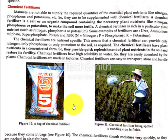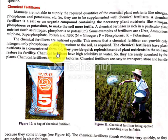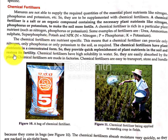The most commonly used fertilizer is NPK. Chemical fertilizers are nutrient-specific and supply plant nutrients in a concentrated form. They provide quick replenishment of plant nutrients in the soil and restore its fertility.